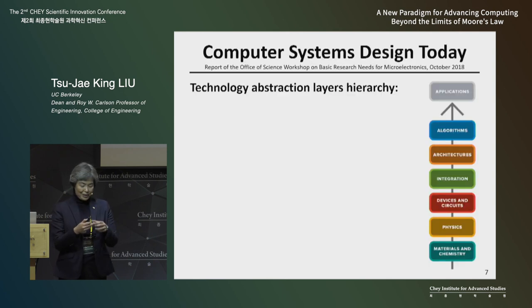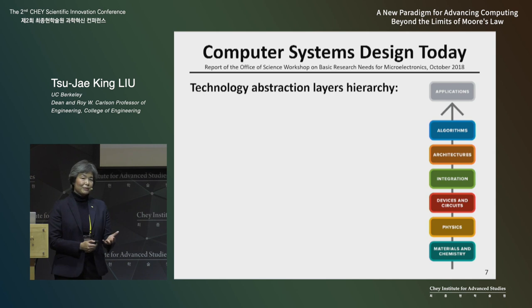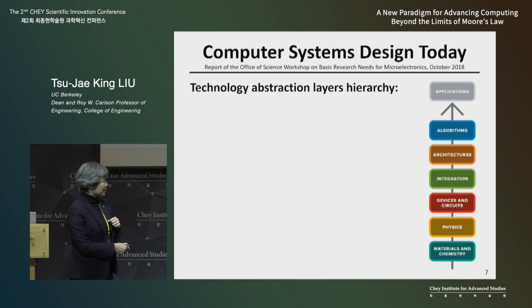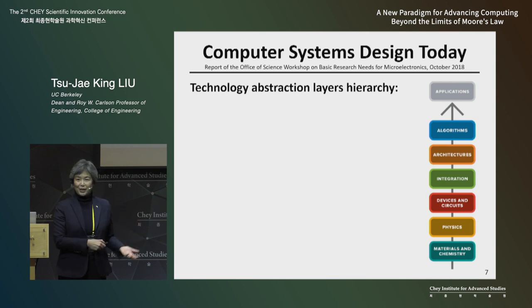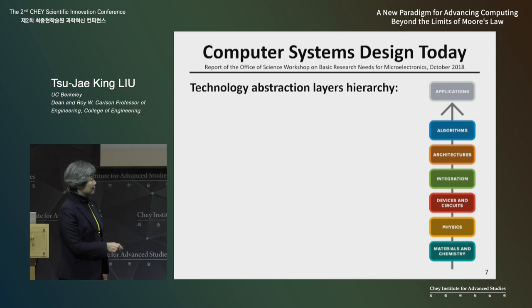These billions of transistors on a chip — how do we design such a complex system? Over the last 50 years, the industry has developed a hierarchical system of abstraction. The people who design the transistors are not the same people who design the microchips. The people who design the software are not the same people who design the computer architecture. We divide the work and the advancement into different layers.